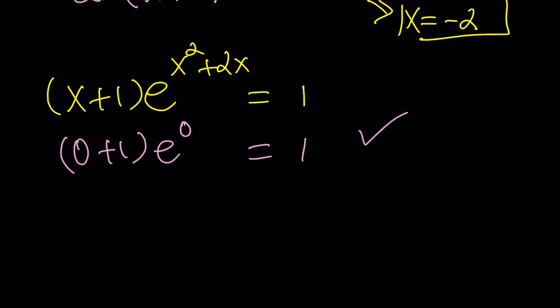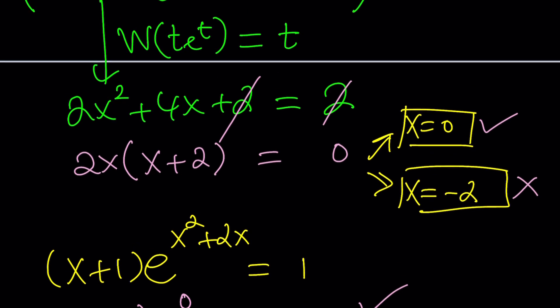What about negative 2? Let's plug it in and find out. Replace x with negative 2. You're going to get that. And then negative 2 squared is 4 minus 4. This is again 0. e to the power of 0 is 1. But this is negative 1. And as you know, negative 1 does not equal 1. So x equals negative 2 does not check. Why did it come up? Because we squared both sides and we introduced extraneous solutions.